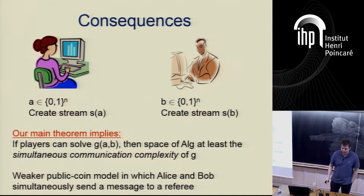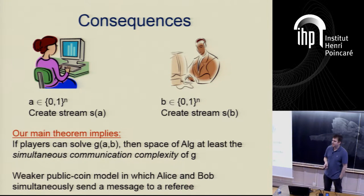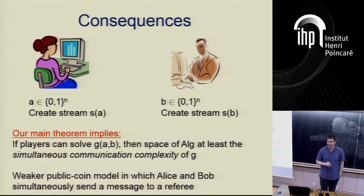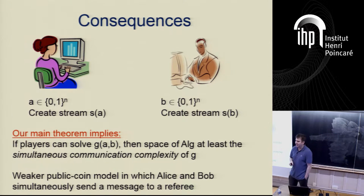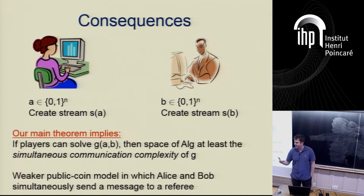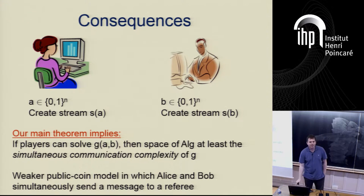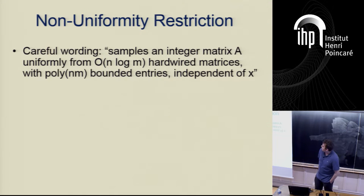This makes it much easier to prove lower bounds. I'll give examples of problems we can prove lower bounds for in this model that we don't know how to prove otherwise. The whole multiplayer set disjointness history in the blackboard model first had a simultaneous lower bound by Bar-Yosef et al., and then later came the one-round results. Let me go over the theorem statement more carefully. The algorithm samples an integer matrix A uniformly from n log M hardwired matrices, each with poly(NM) bounded integer entries at the beginning.